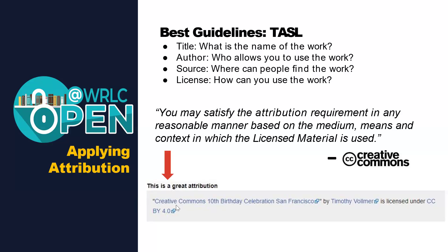Here's an example at the bottom of the slide of a great way to give attribution to an image, photo, or video you discover. It shows the title of the image — 'Creative Commons 10th Birthday Celebration' — in parentheses, lists Timothy Volmer as the author, and indicates it has a CC BY license. That's a great guideline for how to give attribution to a video, photo, or image you discover.